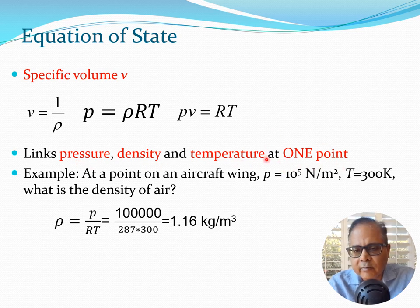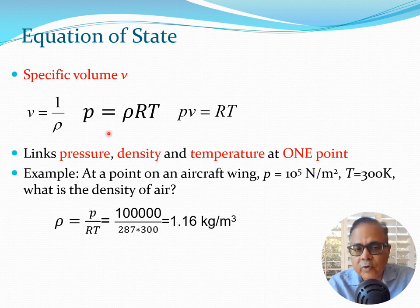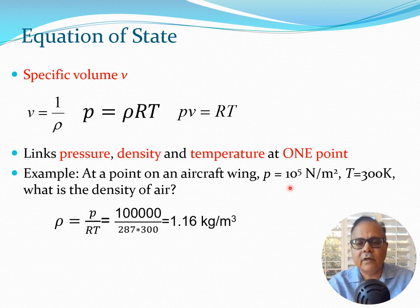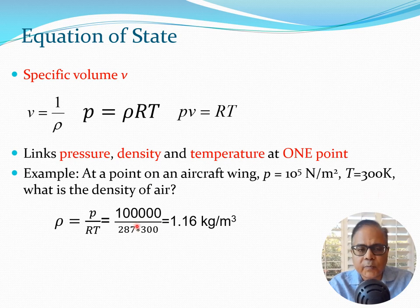Remember that the equation of state links these properties at one point — meaning every point in, say, a room satisfies this equation. As a simple example, consider a point on an aircraft wing where the pressure is 10⁵ N/m² and the temperature is 300 K. The question is: what is the density of air at that point?